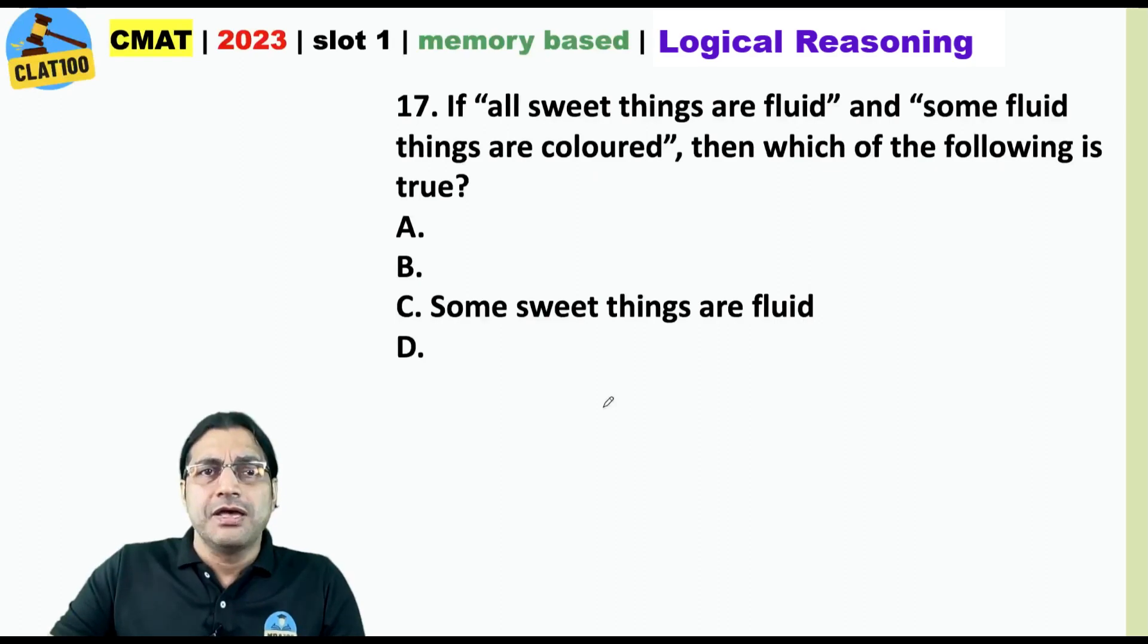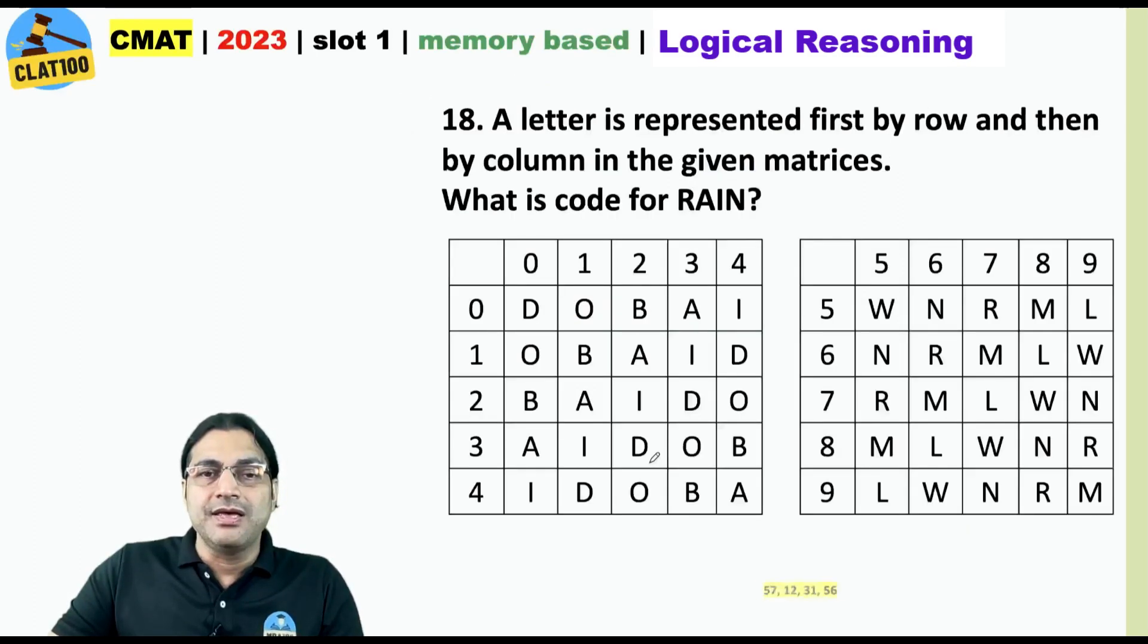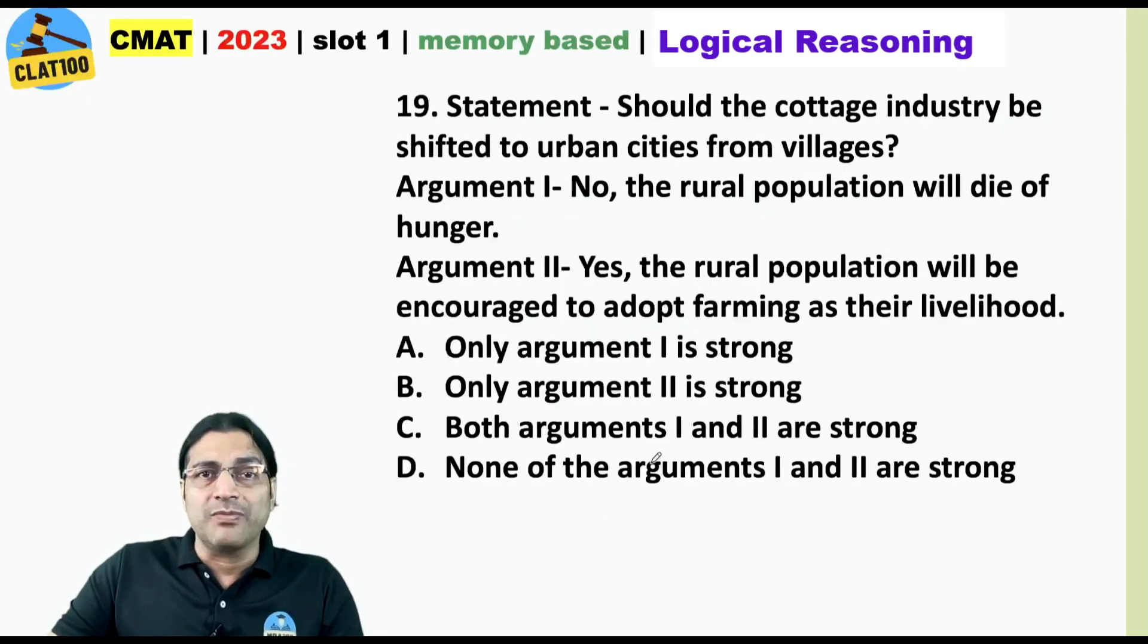Here. All the options to this question were incorrect. Hope NTA looks into this. Here. This was very simple. 57, 12, 31 and 56. What about this one?